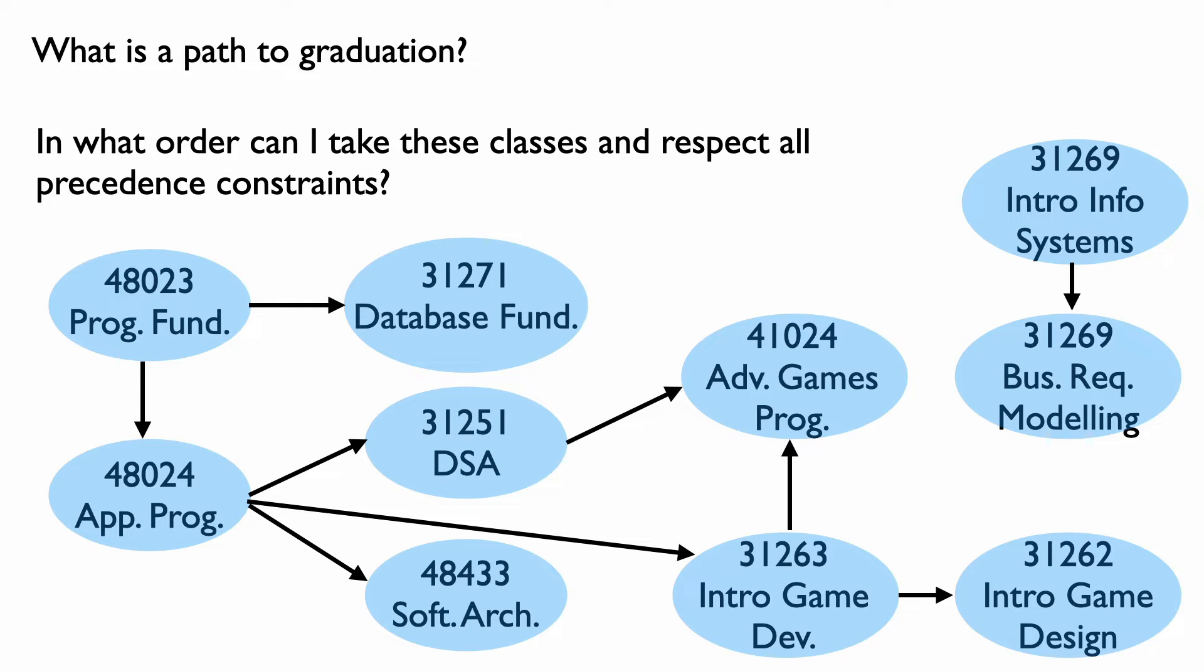When faced with a graph like this, you may ask yourself, how can I graduate? In other words, what is an order in which I can take these classes that respects all the prerequisite constraints?